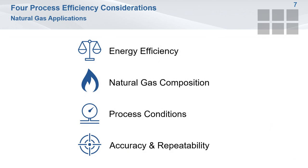There are four key considerations related to natural gas process efficiencies that we will be looking at today. The first is energy efficiency — knowing how changes in mass flow of natural gas impact calorific value. The second is gas composition — what impact does a change in methane percentage have on overall efficiency? Third, process conditions — am I able to measure my flow of natural gas under all operating conditions? And four, accuracy — can I rely on my flow measurement to help optimize the efficiency of my process?